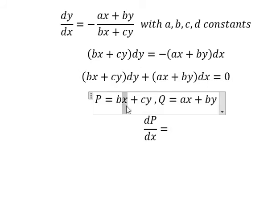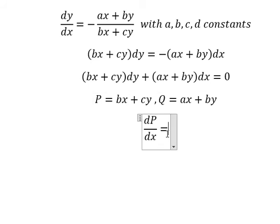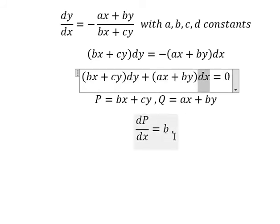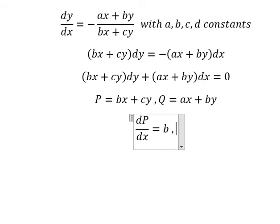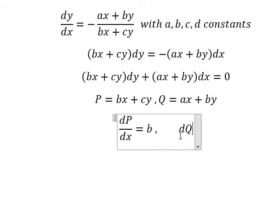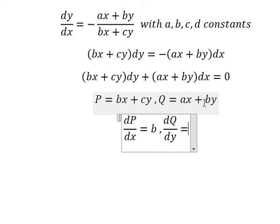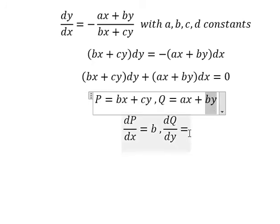So first derivative of x we have number one, so we have b. We have dx, that means we need to do first derivative of Q with respect to y. So we just have only this one and we have b.